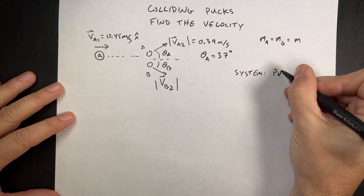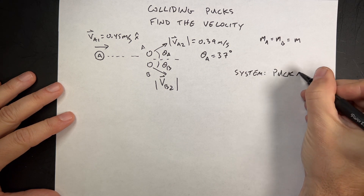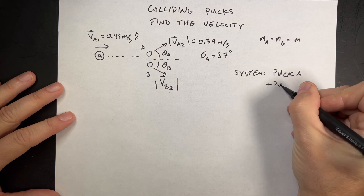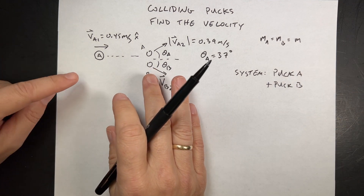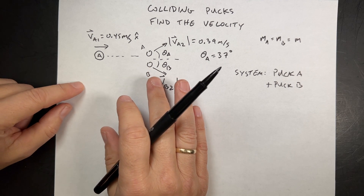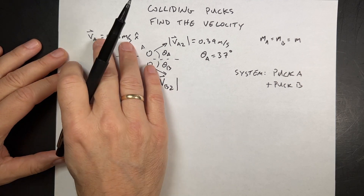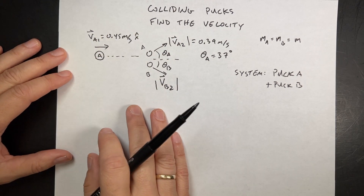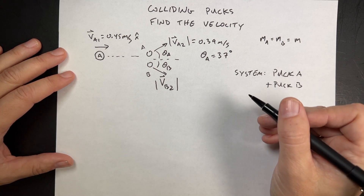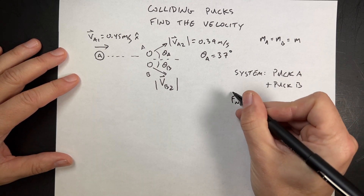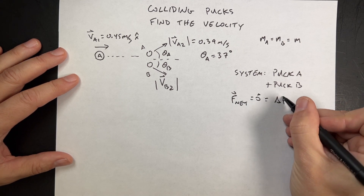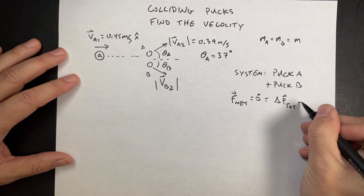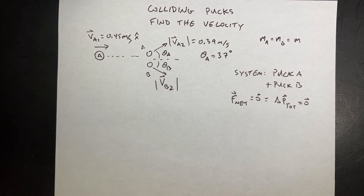If I take the system of puck A plus puck B, there is a gravitational force acting on them, but there's also an upward normal force, so those two cancel. There's no net force in the system. If F-net is 0, which it is, then delta P total is equal to 0 — and those are vectors. That's just a formal way of saying conservation of momentum.